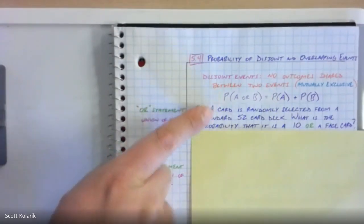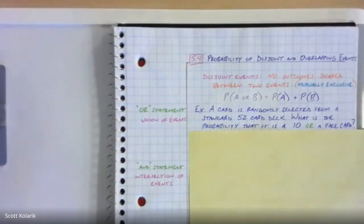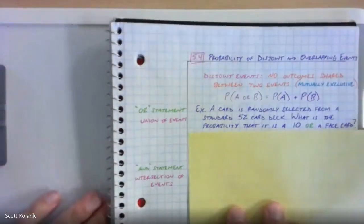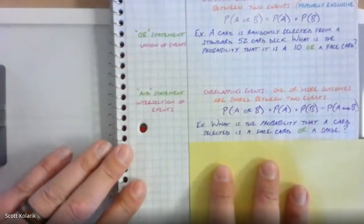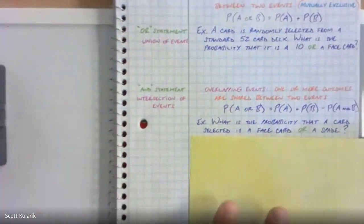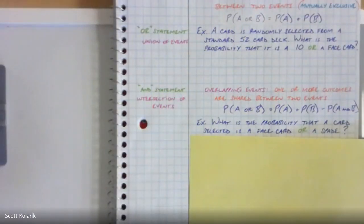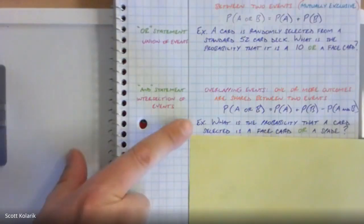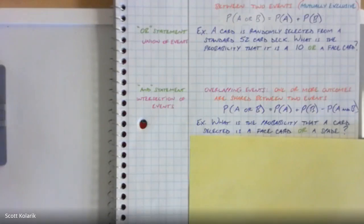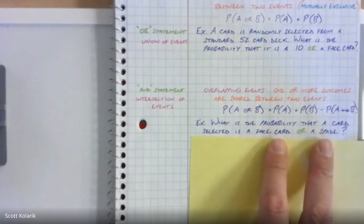The face cards are kings, queens, and jacks — the 10 is a numerical card with nothing in common with face cards. That is a pair of disjoint events. I have a formula here for calculating the total probability of either scenario happening. Before I jump into that, I also want to give the second illustration — overlapping events — which is the flip side. Overlapping events are two events that do share some common ground.